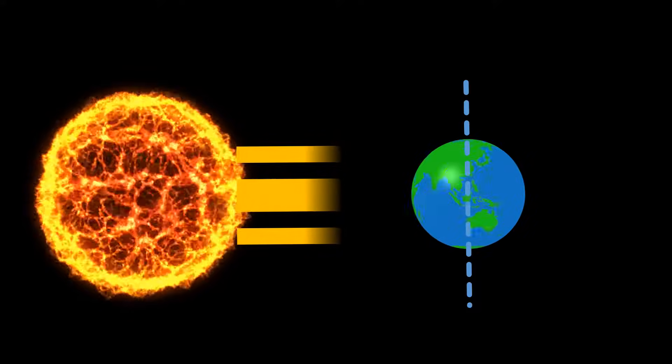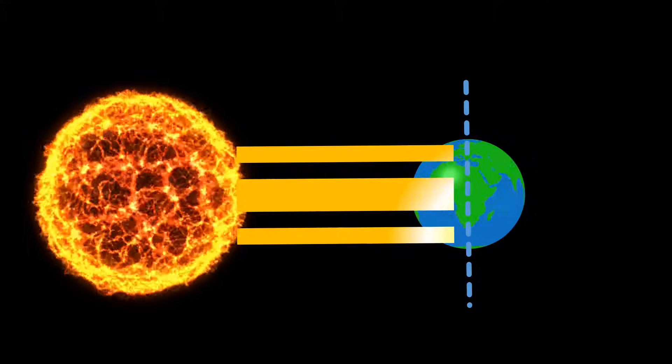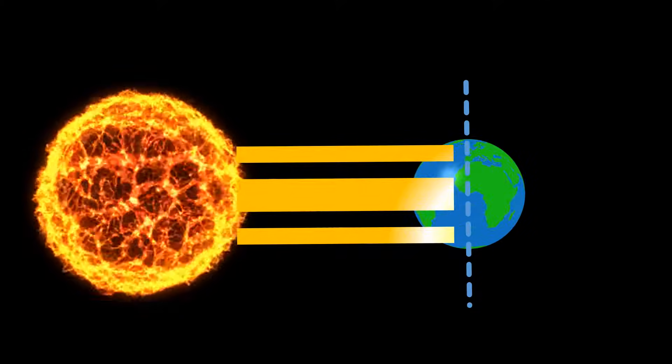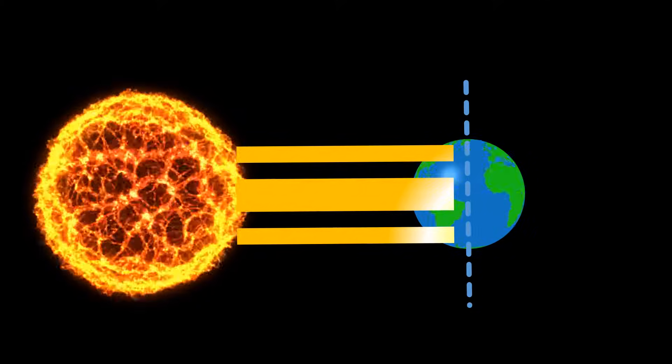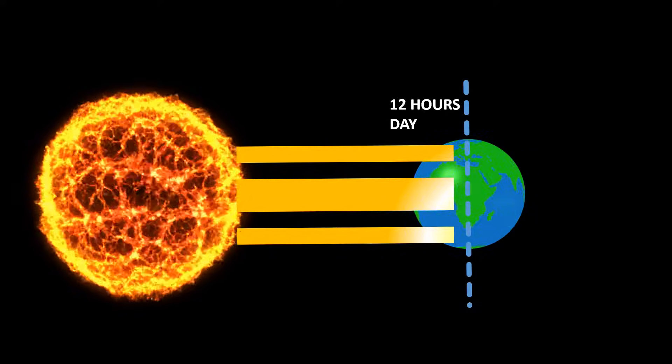If the Earth rotates in its axis which is perpendicular to its orbital plane of the sun, all places on Earth would experience equal amounts of day and night, that is, 12 hours of day and 12 hours of night.